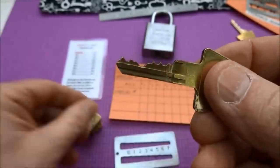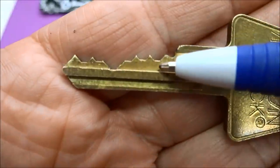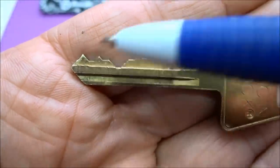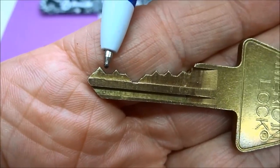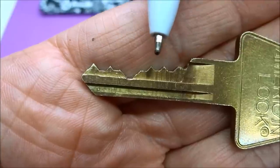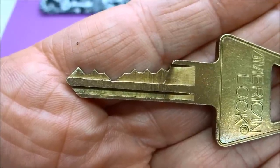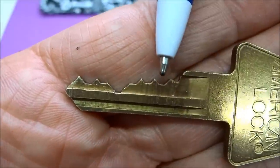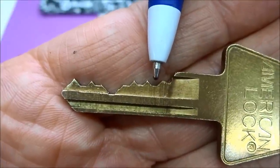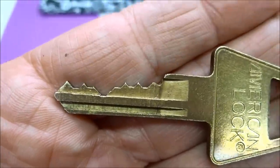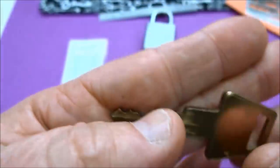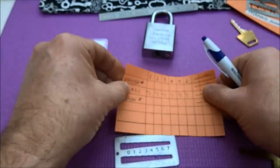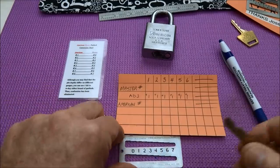How do we decode this key? You'll notice that each of the positions here we can number from here - one, two, three, four, five, six. Or some companies start at the tip like Best. For this key, we're going to call this position number one through six. We need to decode that, so I've created a little chart here.